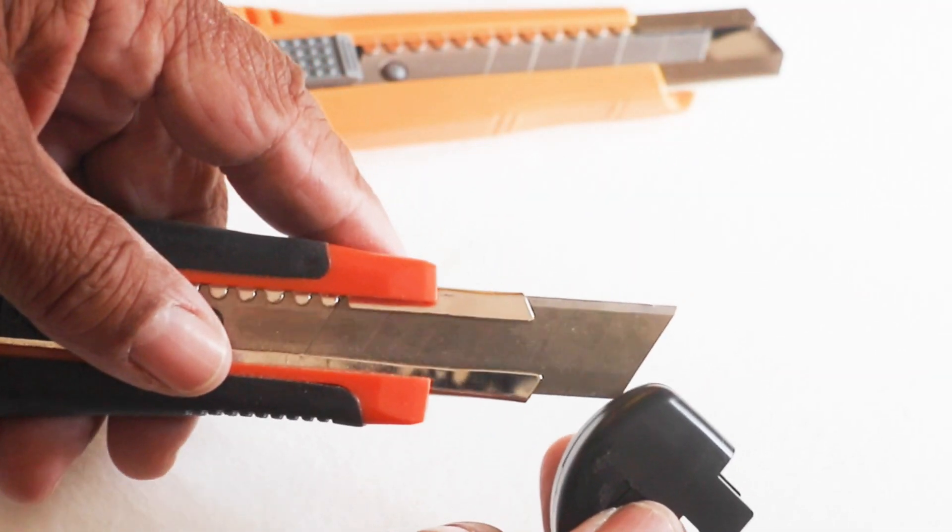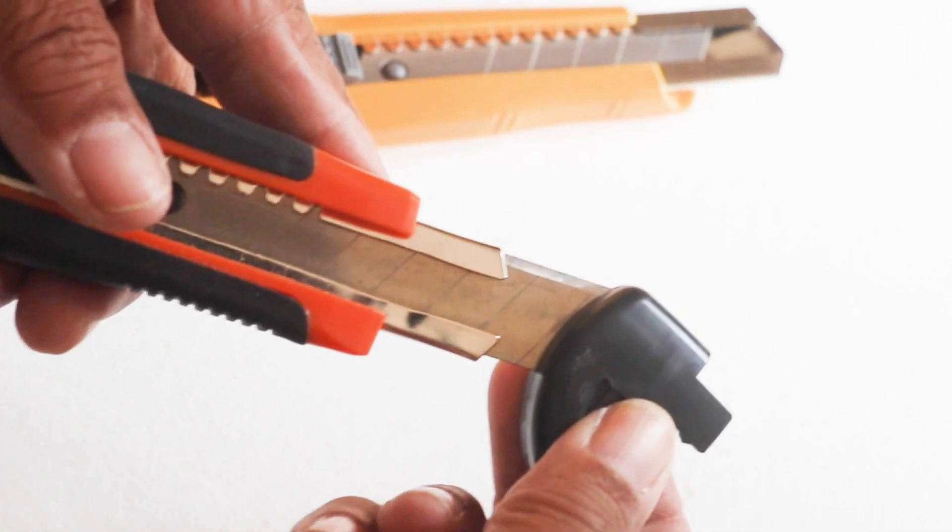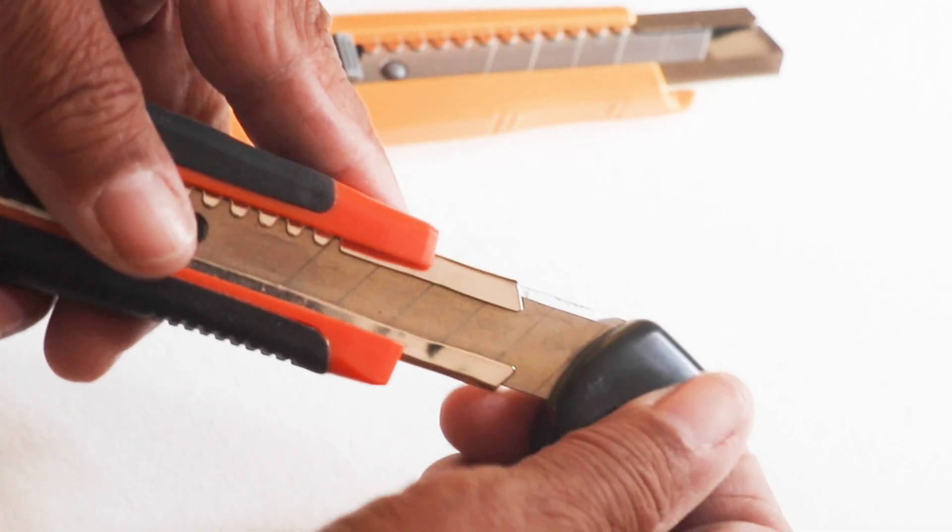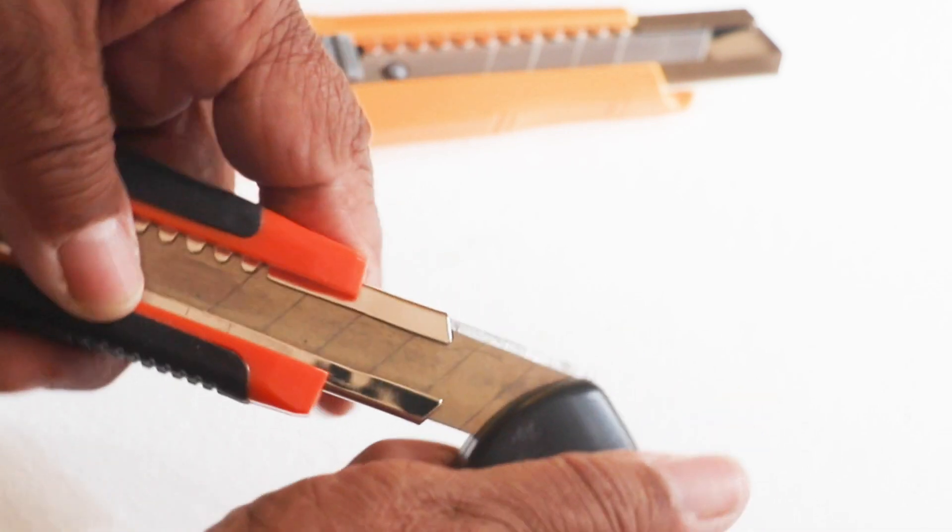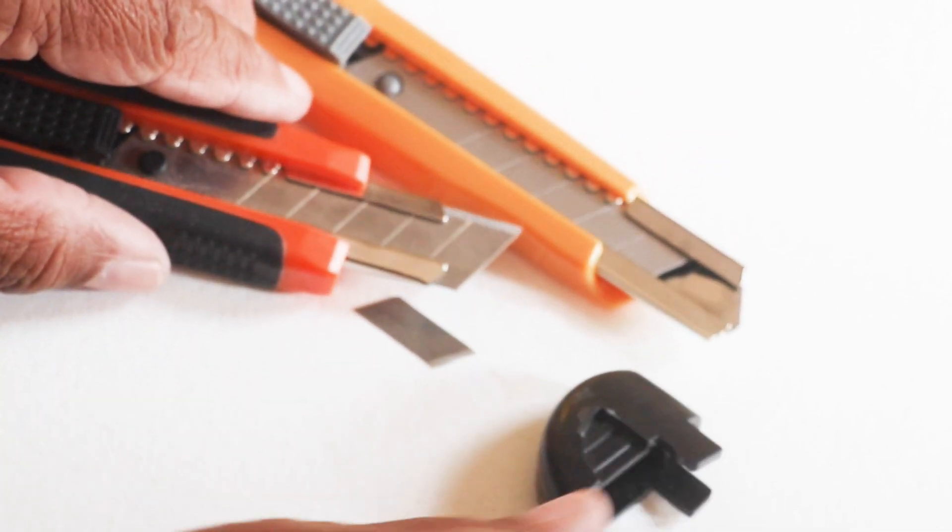Take your handle. Insert the blade. Now make certain that the point is buried in the handle before you try to snap it. And then just snap it off. And it's just that easy.